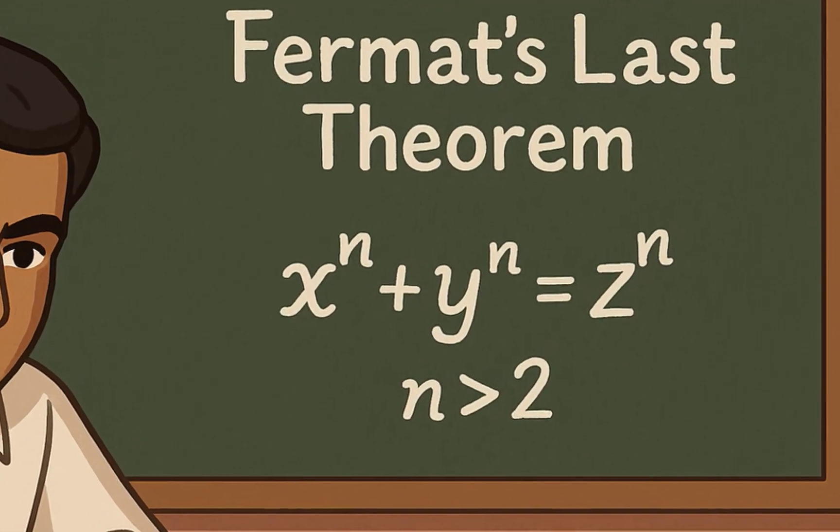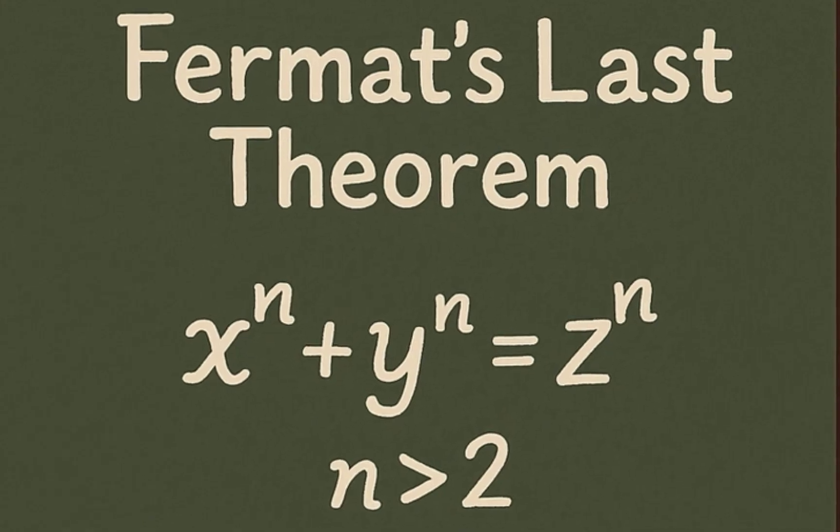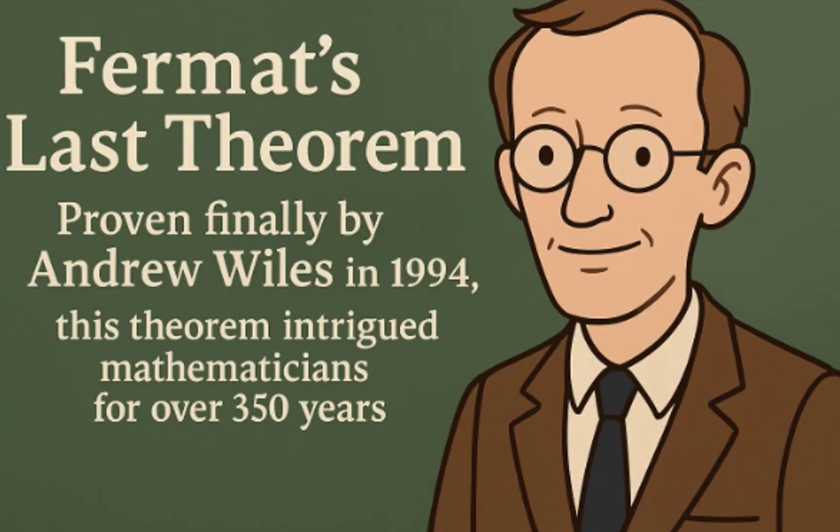X to the power of n plus y to the power of n equals z to the power of n has no integer solutions for n greater than two. Proven finally by Andrew Wiles in 1994, this theorem intrigued mathematicians for over 350 years.